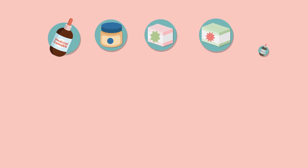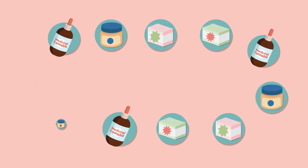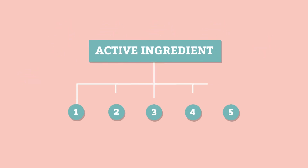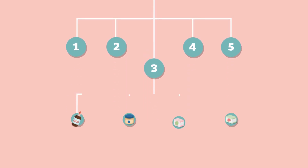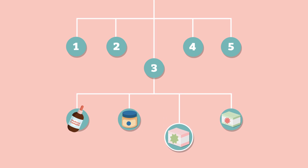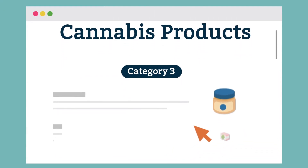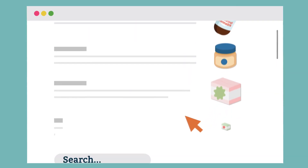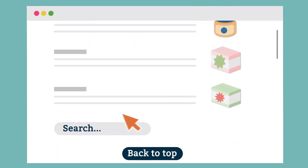SAS and Authorised Prescriber applications for medicinal cannabis products are submitted by category of active ingredient. There are five categories of active ingredient for you to consider based on your patient's condition, and once approved, you can issue prescriptions for any product that falls under that category. A list of medicinal cannabis products and their corresponding categories is available on the TGA website.